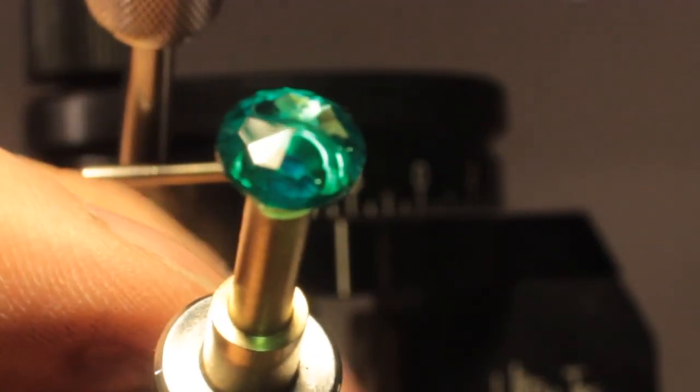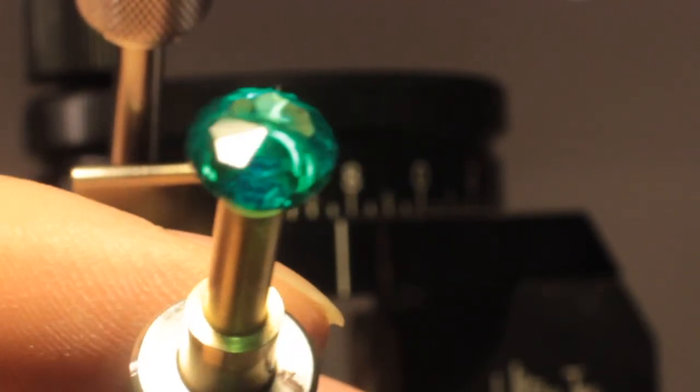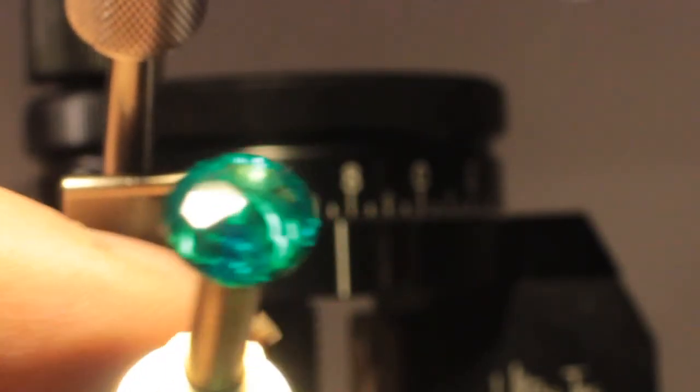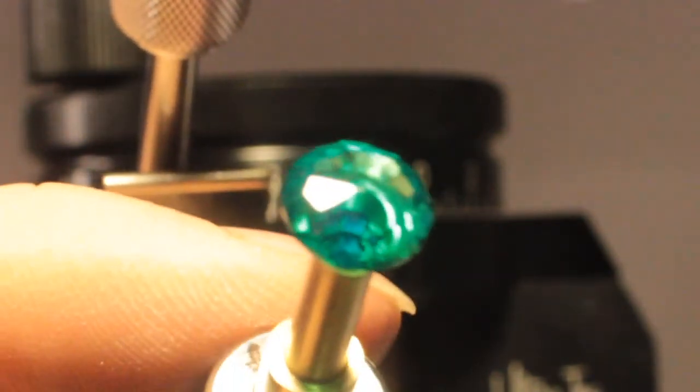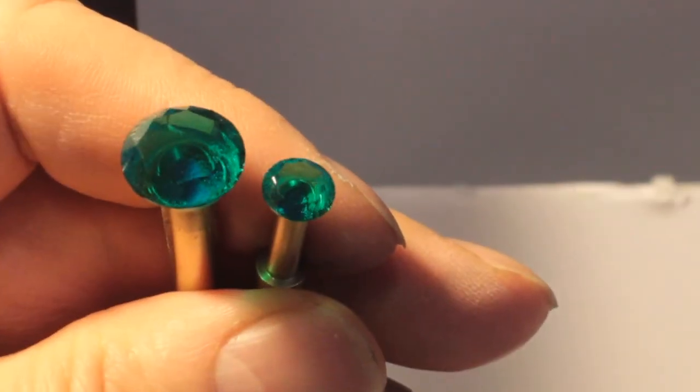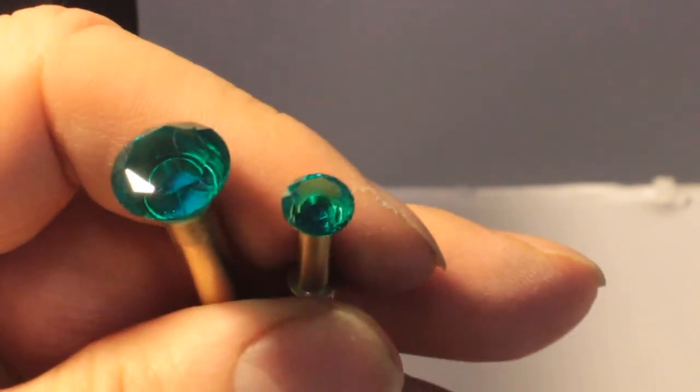And now I'll take it off the top, set up the Ultra Tech to cut the table and I'll cut the table and polish the table of both of our emeralds and then we'll be done.